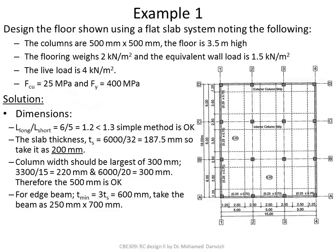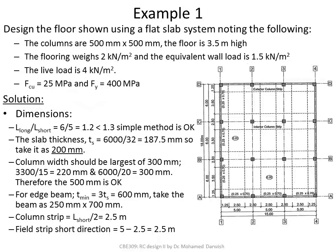The column strip in the short direction is 5/2 = 2.5 m wide. The field strip is 5 − 2.5 = 2.5 m wide. In the long direction, the field strip is 6 − 2.5 = 3.5 m wide.